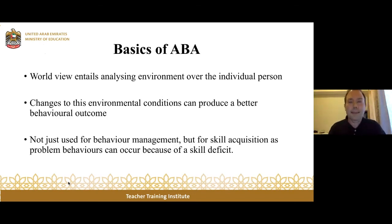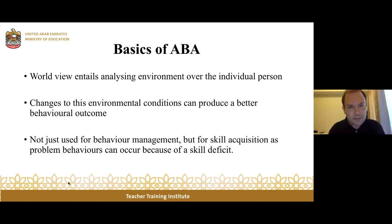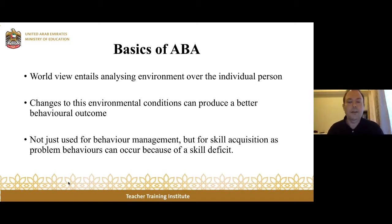That's the basics of applied behavioral analysis. Our worldview focuses on the environment over the individual. If a child's not doing something, we don't blame them. How often does that happen? Our instinct as educators or parents is to assign blame to the child. But should we be doing that? Is it the child, or is it the environment that we've created? Are there things that we could be teaching to get rid of those problem behaviors? I would suggest there are. By changing the environment, we can produce a better behavioral outcome.